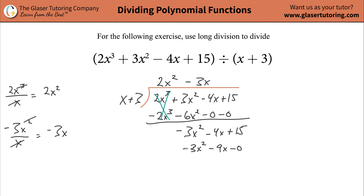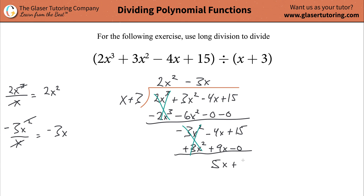Distribute this negative to each of the terms. Since they're all negative, you're going to turn them into positives. A little life advice: turn the negative into the positive — things could always be worse, so be happy and thankful for what you have. Add these two together — a positive and a negative — so that's going to be positive 5x. And then this is just positive 15 because the zero doesn't do anything.